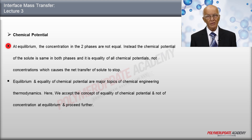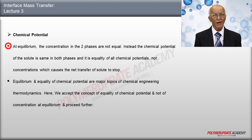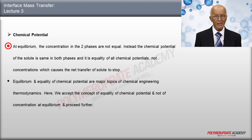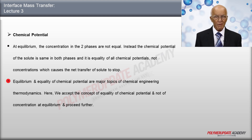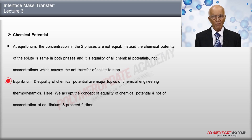At equilibrium, the concentrations in the two phases are not equal. Instead, the chemical potential of the solute is the same in both phases, and it is equality of chemical potentials — not concentration — which causes the net transfer of solute to stop. Since equilibrium and equality of chemical potentials are major topics of chemical engineering thermodynamics, we accept this concept and proceed further.